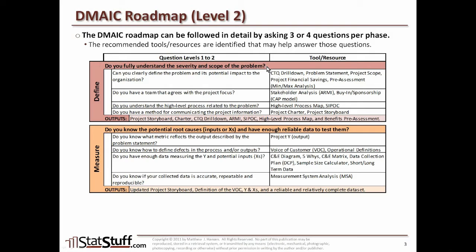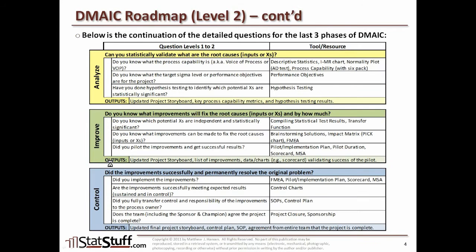The goal is to try to answer each of the top-level questions for each phase. As you do answer yes to those questions, you move on to the next phase, then to the sub-questions within those phases, and so on all the way through the control phase. That's the introduction again to what we did last time when we talked about the level one and level two questions for the DMAIC roadmap.